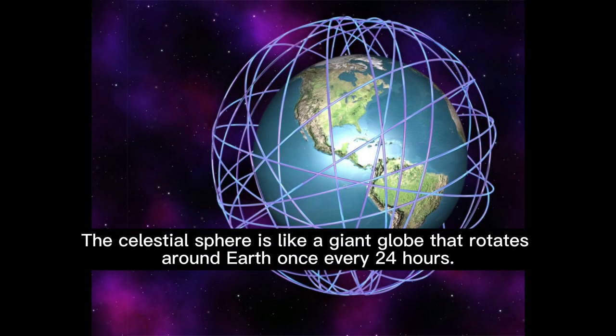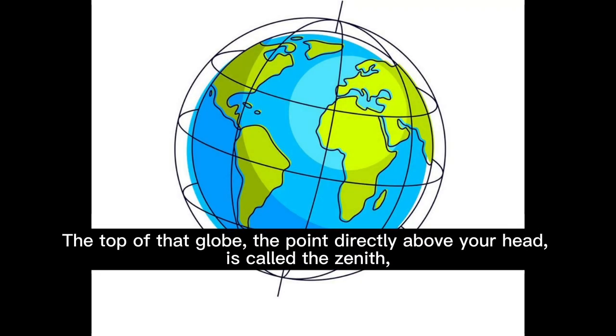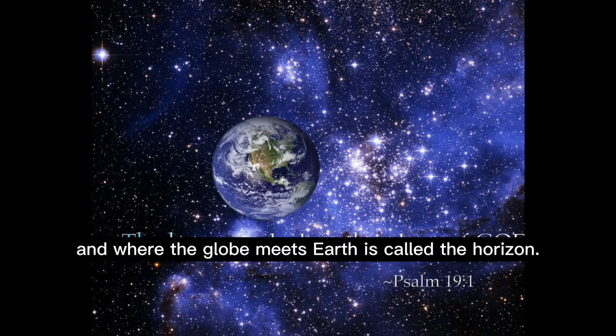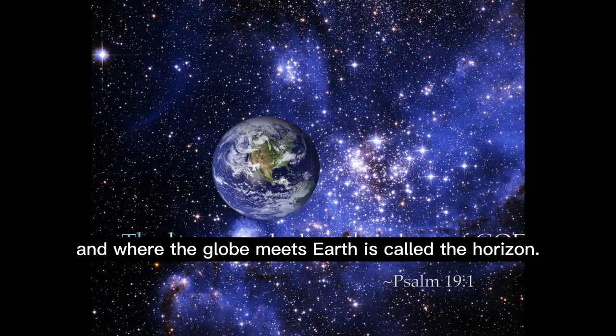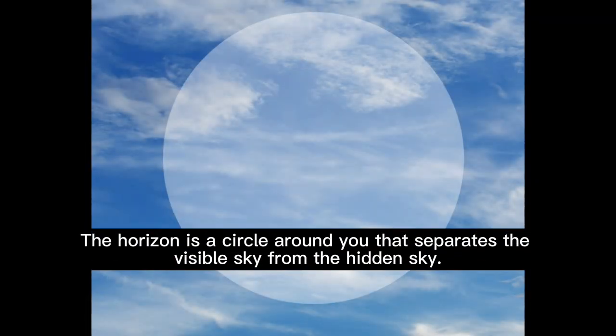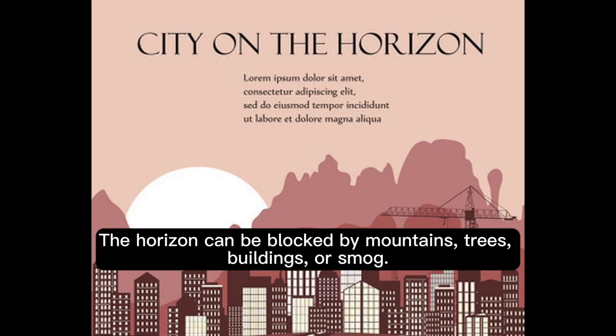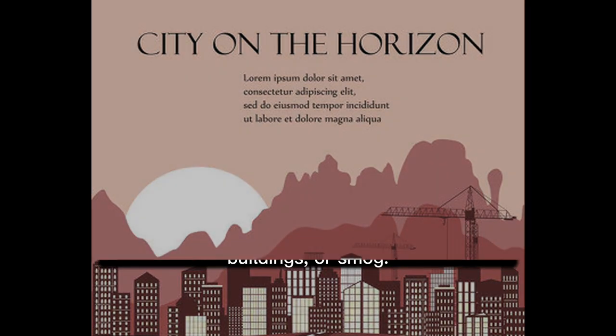The celestial sphere is like a giant globe that rotates around earth once every 24 hours. The top of that globe, the point directly above your head, is called the zenith, and where the globe meets earth is called the horizon. The horizon is a circle around you that separates the visible sky from the hidden sky. The horizon can be blocked by mountains, trees, buildings, or smog.